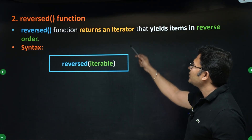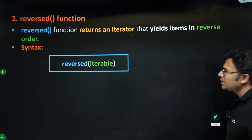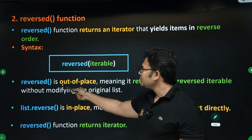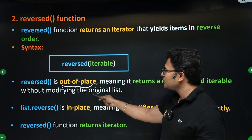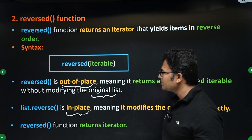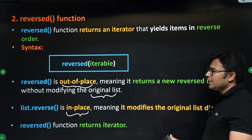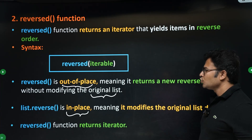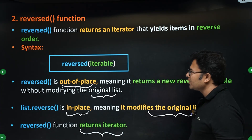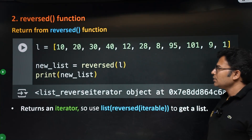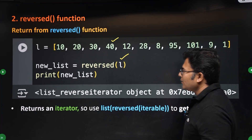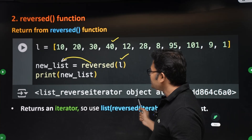The reversed() function returns an iterator that yields items in reverse order. Like sorted(), it is out-of-place — it creates a new result without modifying the original list. Compare this to list.reverse(), which you've already seen: list.reverse() does in-place reversing, modifying the same list and returning None. When you call reversed(l), you'll see it returns an object — a reverse iterator, not a list.